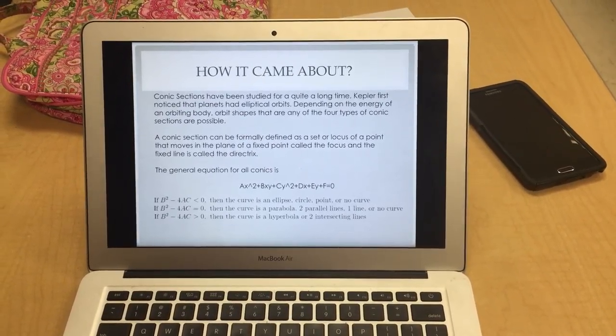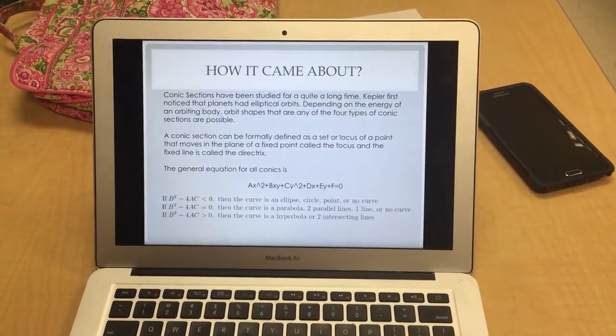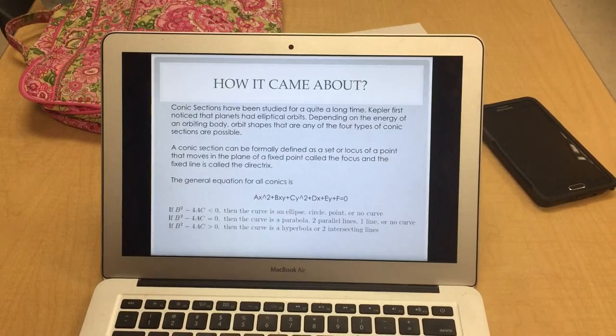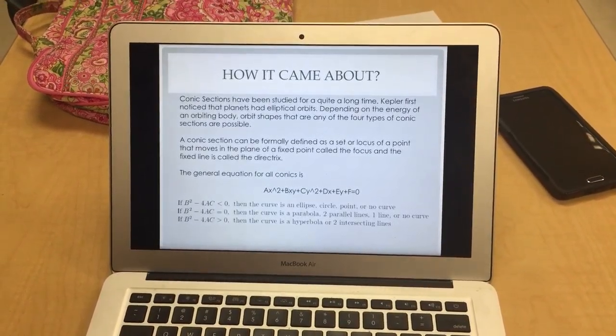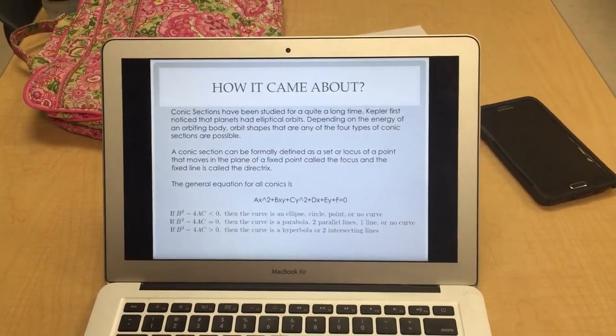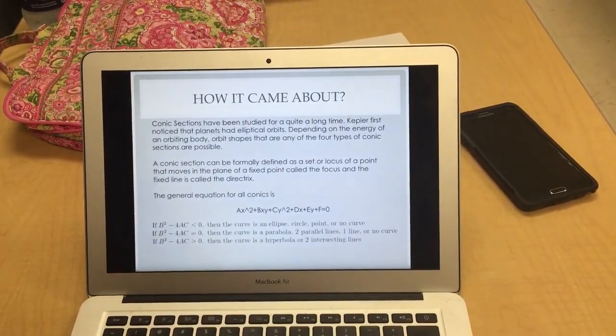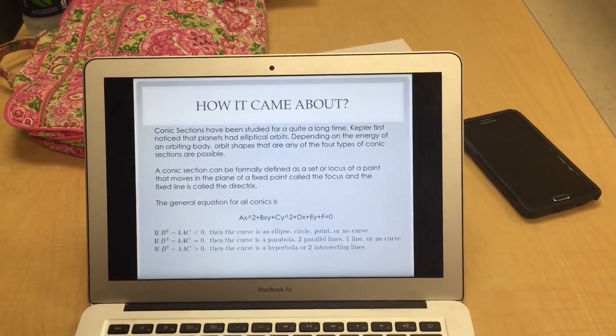The general equation is ax squared plus bxy plus cy squared plus dx plus ey plus f equals zero. And we'll explain each equation for our specific conics.